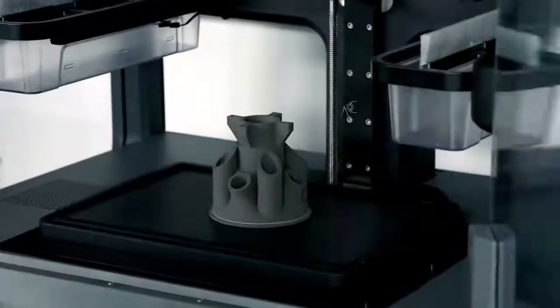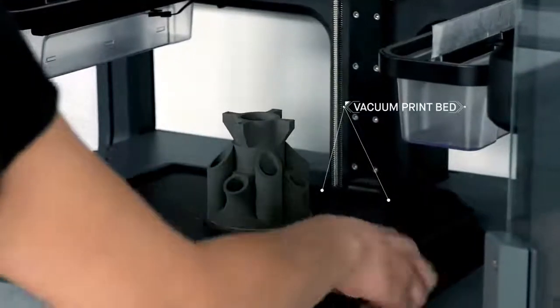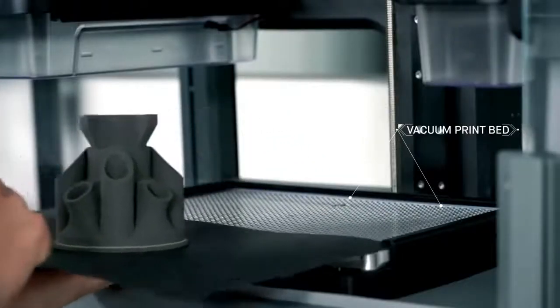During the print, a removable print sheet is held in place by the vacuum bed beneath it, providing a smooth, secure platform.